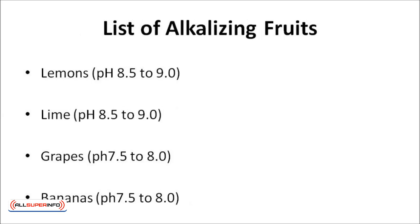Here is a list of alkalizing fruits. Lemons are highly alkaline-forming with a pH of 8.5 to 9.0, and are an excellent remedy against colds, coughs, sore throats, heartburn, and gastro-upsets. Limes are also extremely alkaline-forming with a pH level of 8.5 to 9.0, and they purify the kidneys. Grapes are a very low alkaline-forming food with a moderate alkaline pH level of 7.5 to 8.0. Bananas are also a very low alkaline-forming food with a moderate alkaline pH level of 7.5 to 8.0, and they elevate acid food in the alkaline direction.